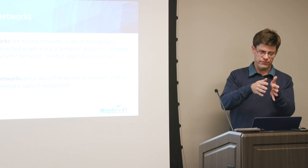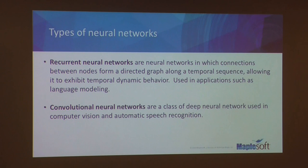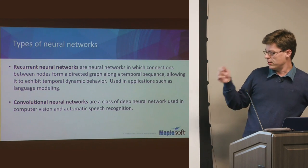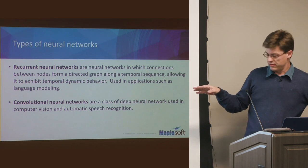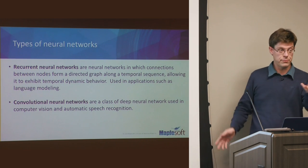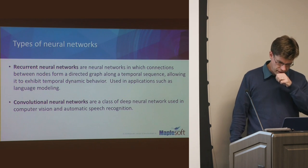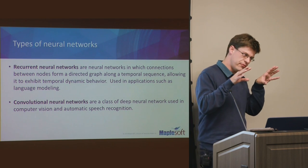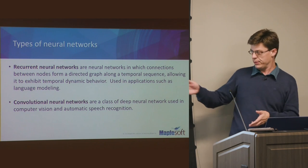There are two types of neural networks that come up a lot in practice. Recurrent neural networks, where connections between nodes form a directed graph along temporal sequences — the network can sort of feed back into itself — are often used in language modeling. Anytime you've seen a neural network generating poetry, song lyrics, or songs, they're typically using RNNs. Convolutional neural networks are regularly used in computer vision and image processing, such as handwriting recognition.